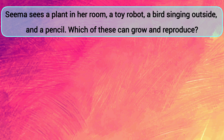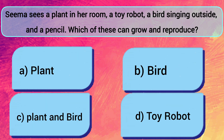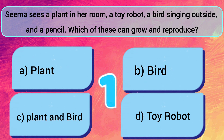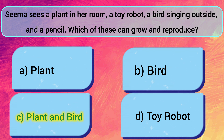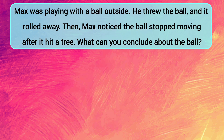Seema sees a plant in her room, a toy robot, a bird singing outside, and a pencil. Which of these can grow and reproduce? A: Plant. B: Bird. C: Plant and bird. D: Toy robot. The answer is C — plant and bird.